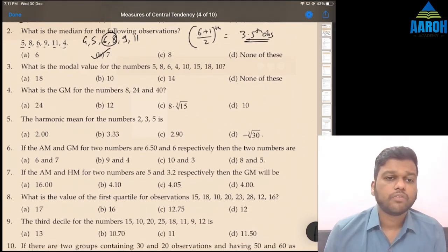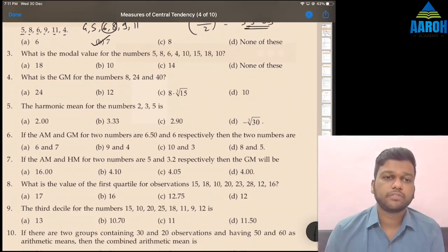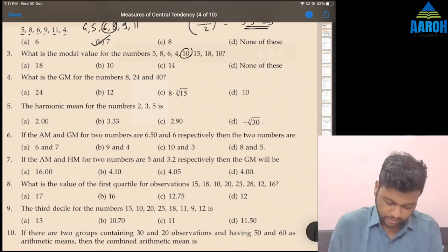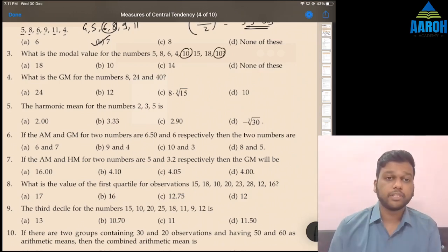Third is again very easy. What is modal value of these numbers? Mode is highest occurring observation which is 10, which is occurring 2 times here. So 10 is the mode.